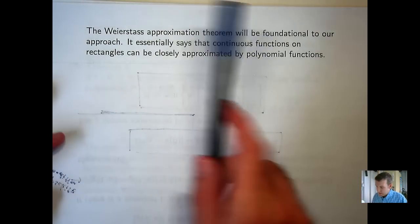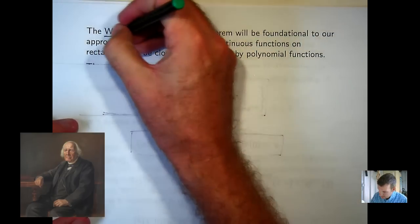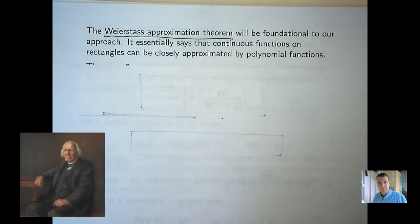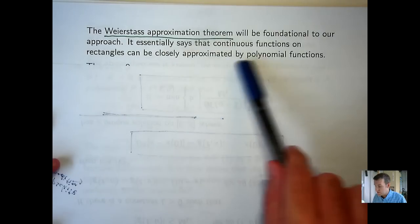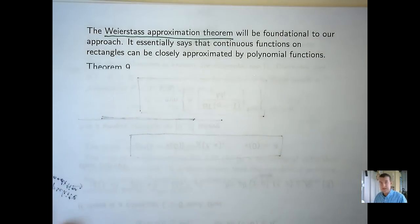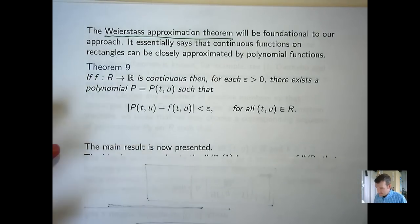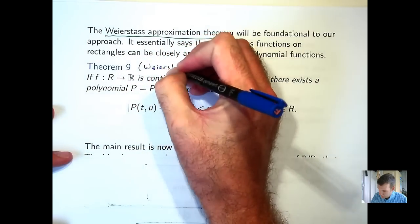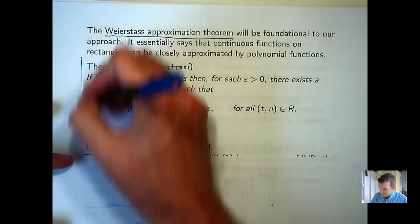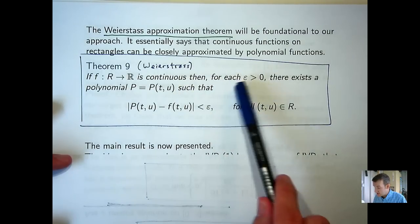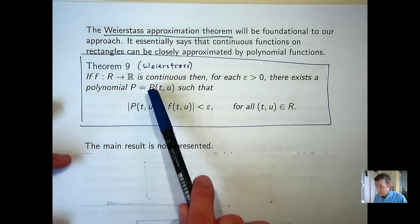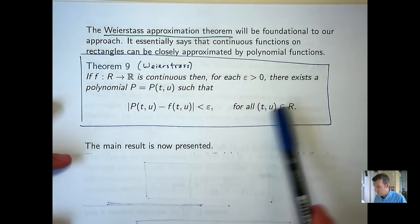We're almost there now. The Weierstrass approximation theorem — a huge result from analysis. I believe Weierstrass proved this result when he was in his 70s. It's going to be foundational to the proof of our main result today. It essentially says that continuous functions of two variables on rectangles can be closely approximated by polynomial functions. Specifically: suppose F is defined on the rectangle and is continuous. Then for each positive ε there is a polynomial P such that |F − P| < ε holds for all points in the rectangle.